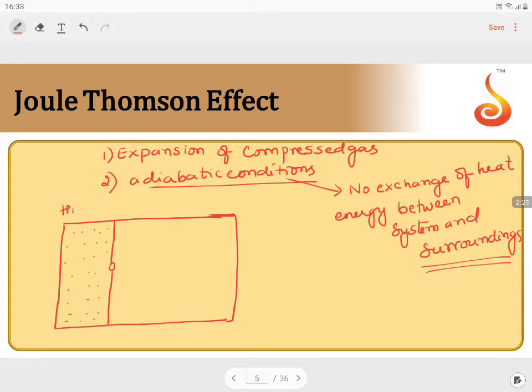If I am moving the gas molecules from high pressure region to a vacuum, which is at low pressure, correspondingly this becomes the low pressure region automatically. Now, the gas is allowed to move through this.